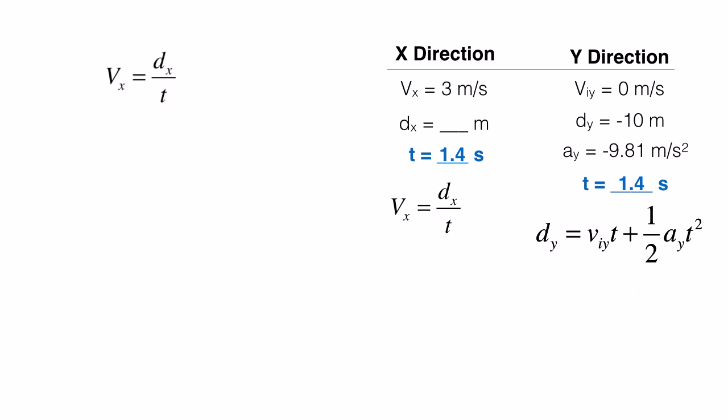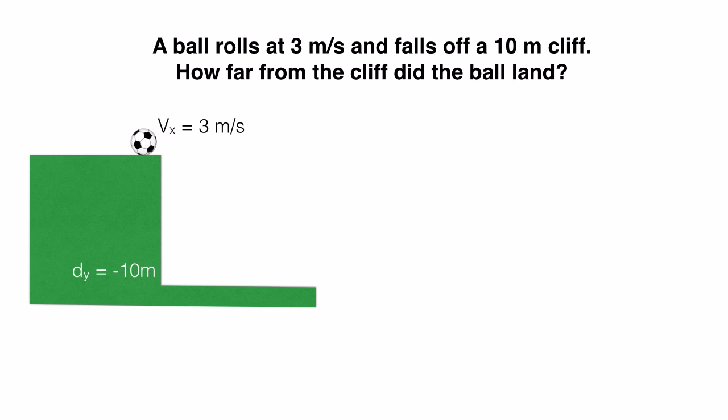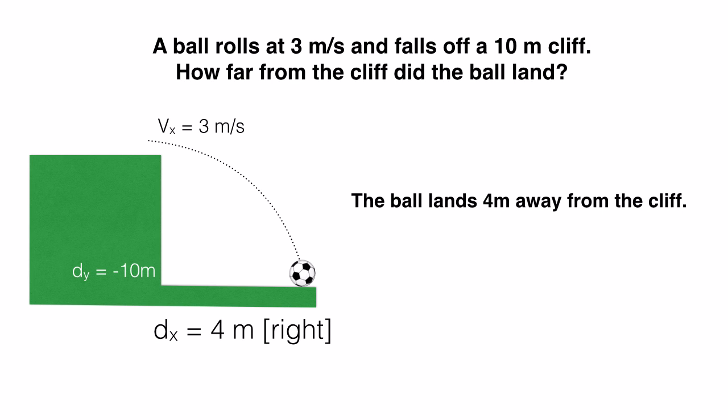Okay, so once again we plug in the information we know into our basic formula. Rearrange algebraically to solve for the displacement in the x. And finally put it in our calculator to get our final answer of 4.2835 et cetera meters to the right. At this point now that we have this, we just need to simplify down to the proper number of significant figures, in this case it's 1, to get our final answer of the ball landing 4 meters away from the cliff.